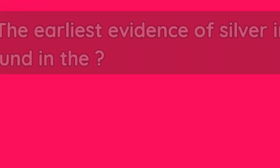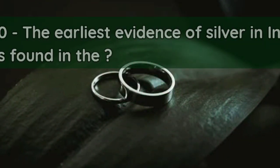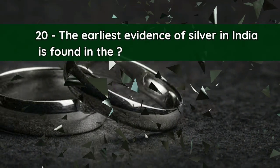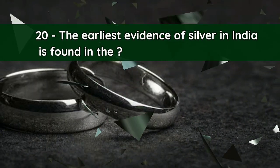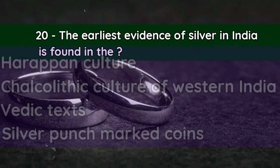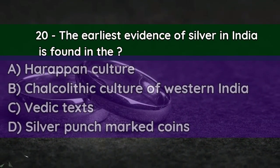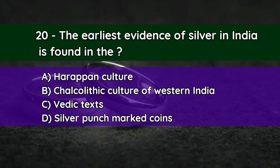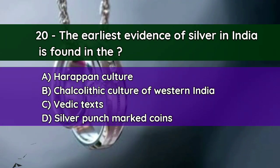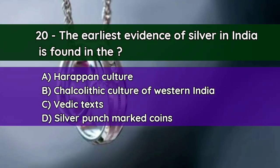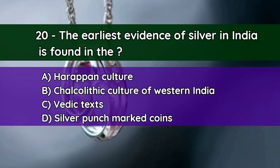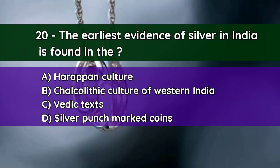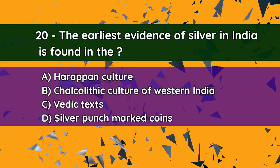Question number twenty: The earliest evidence of silver in India is found in the — A. Harappan culture, B. Chalcolithic cultures of Western India, C. Vedic texts, D. Silver punch-marked coins. And the correct answer is A — Harappan culture.